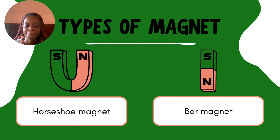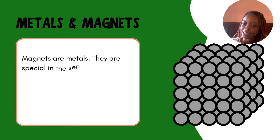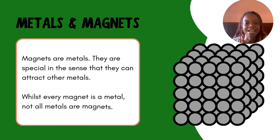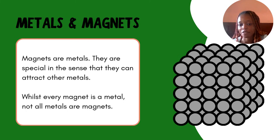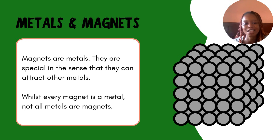Now, magnets are metals — they are a special kind of metal in the sense that they can attract other metals. Every magnet is a metal, but not every metal is a magnet, because not every metal has the ability to attract other metals. So all magnets are metals, but not every metal is a magnet.